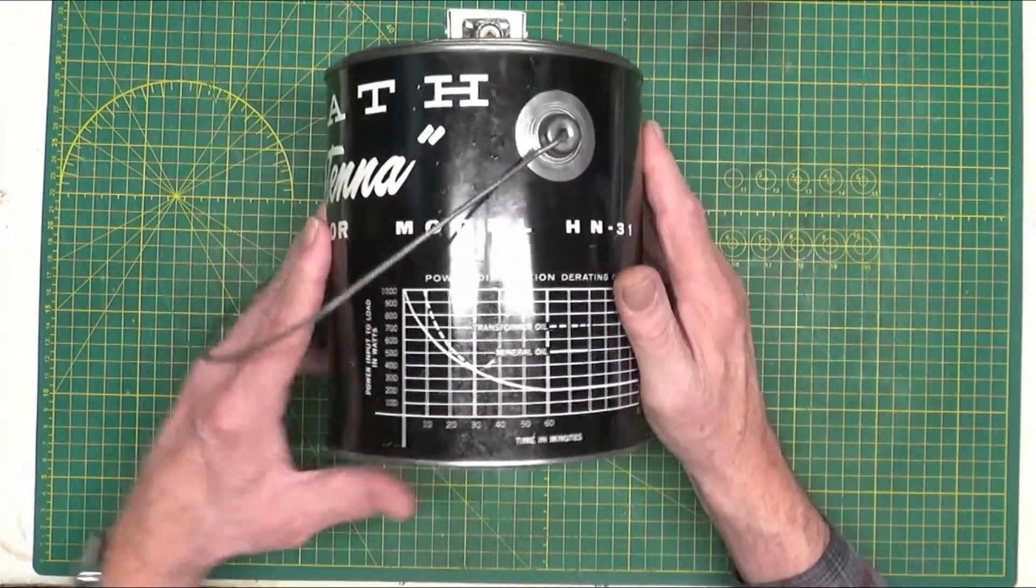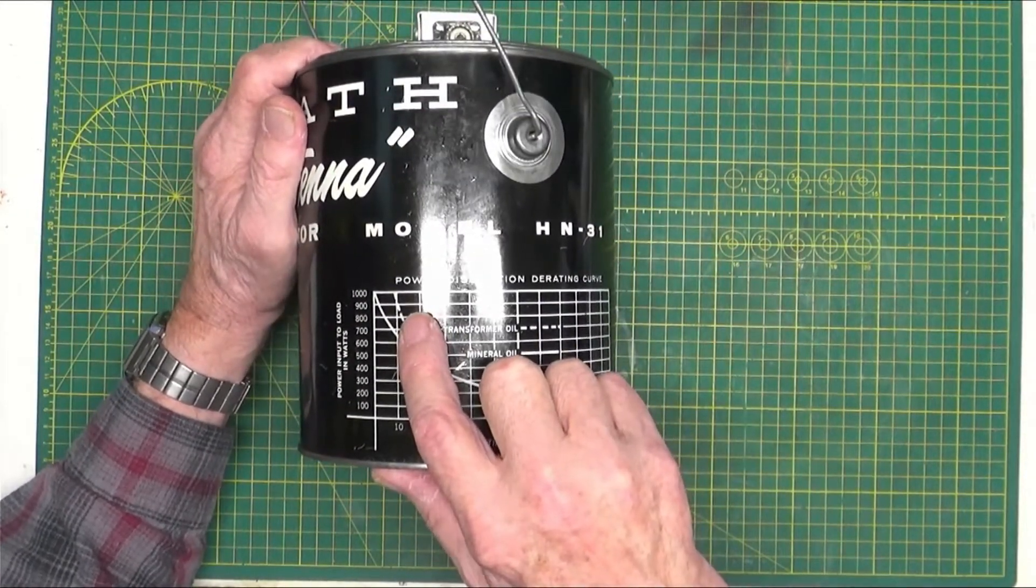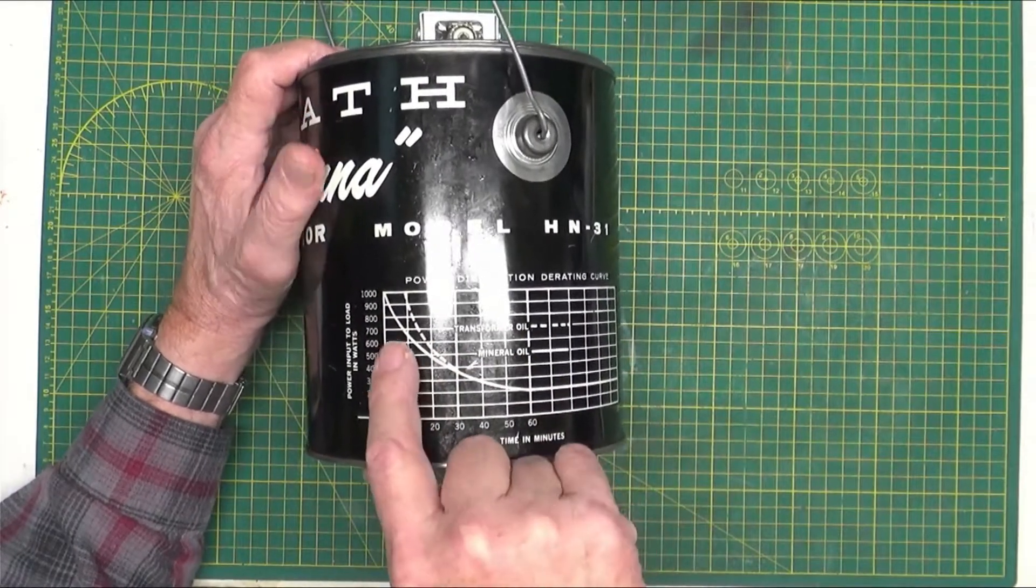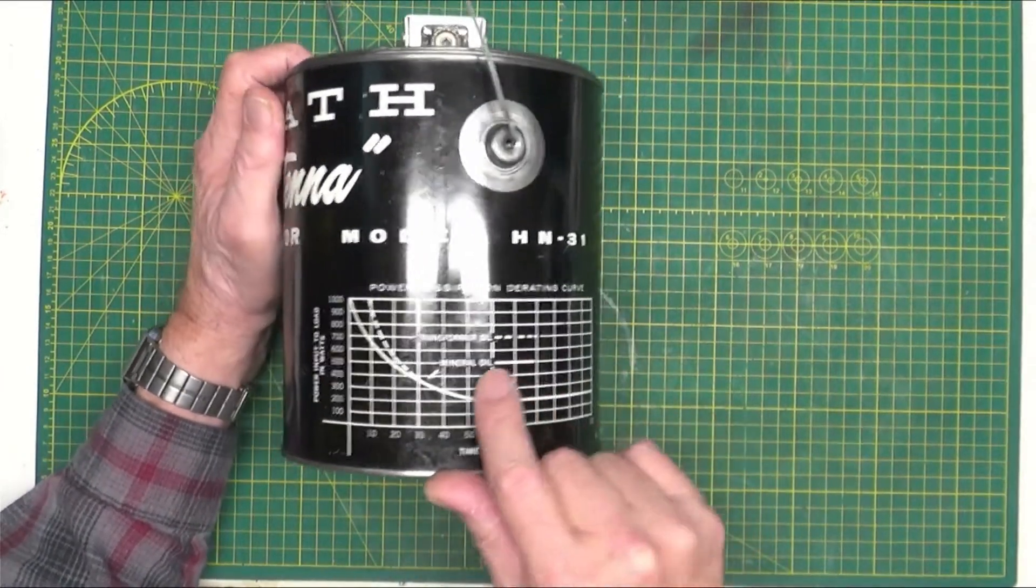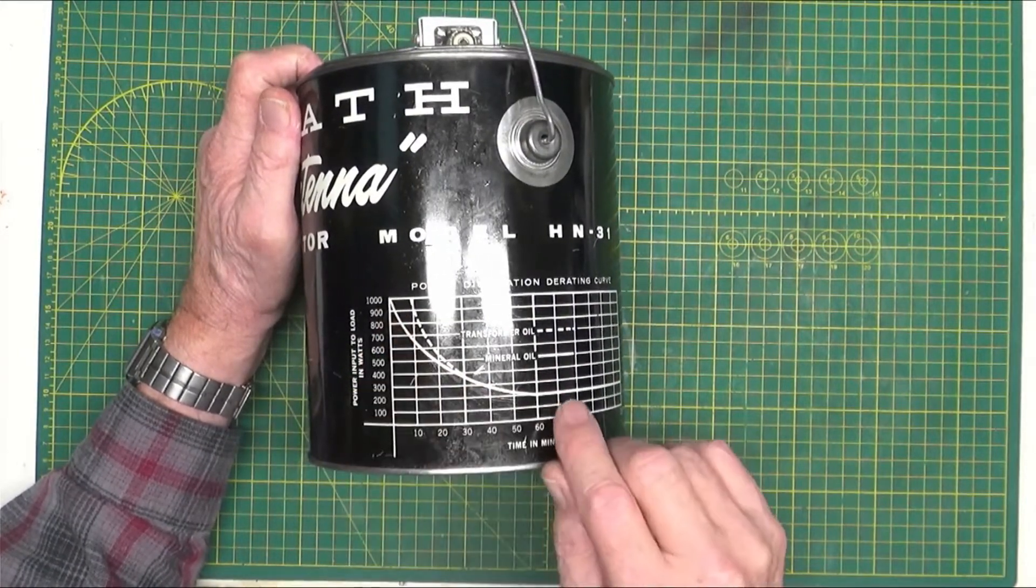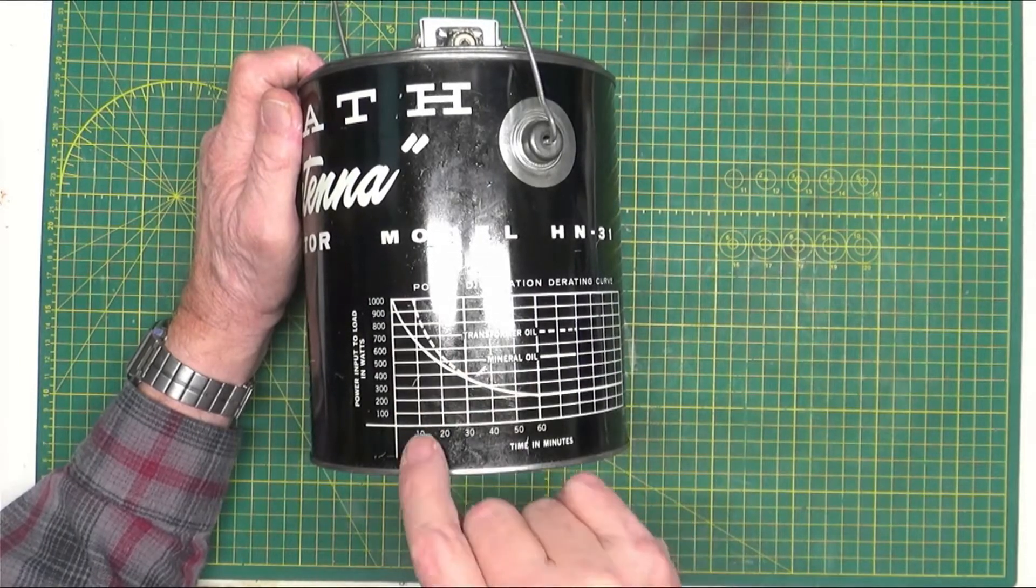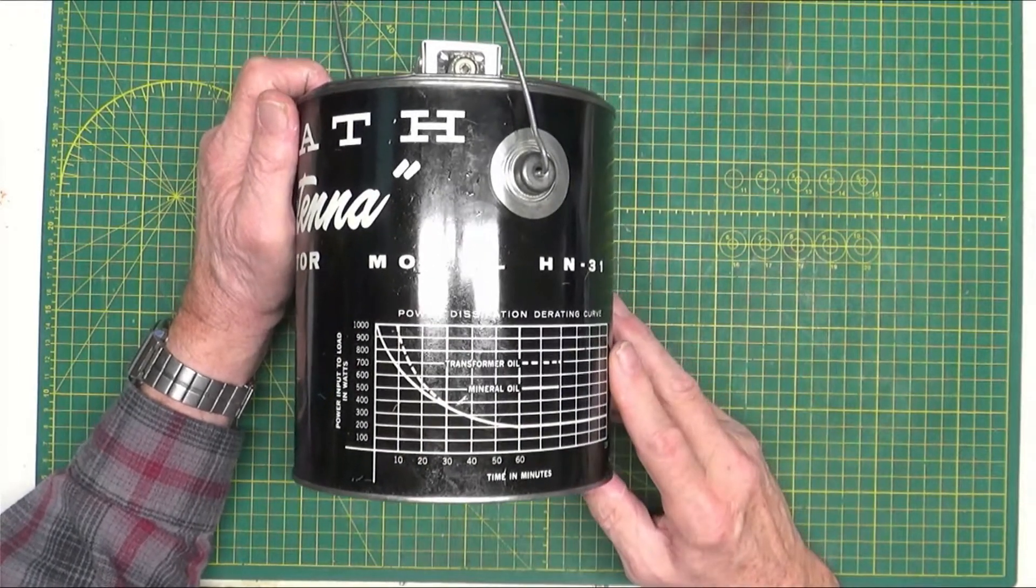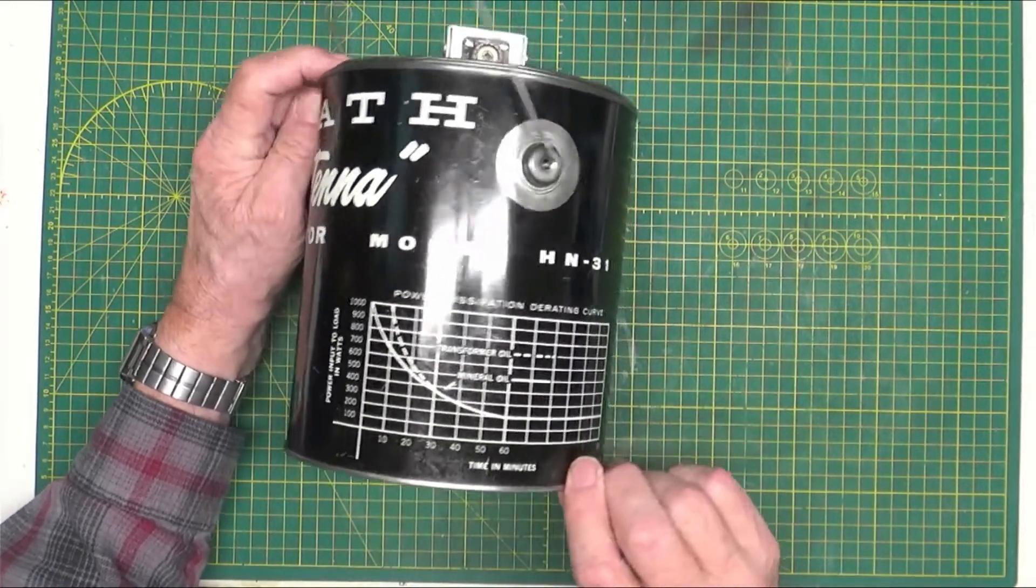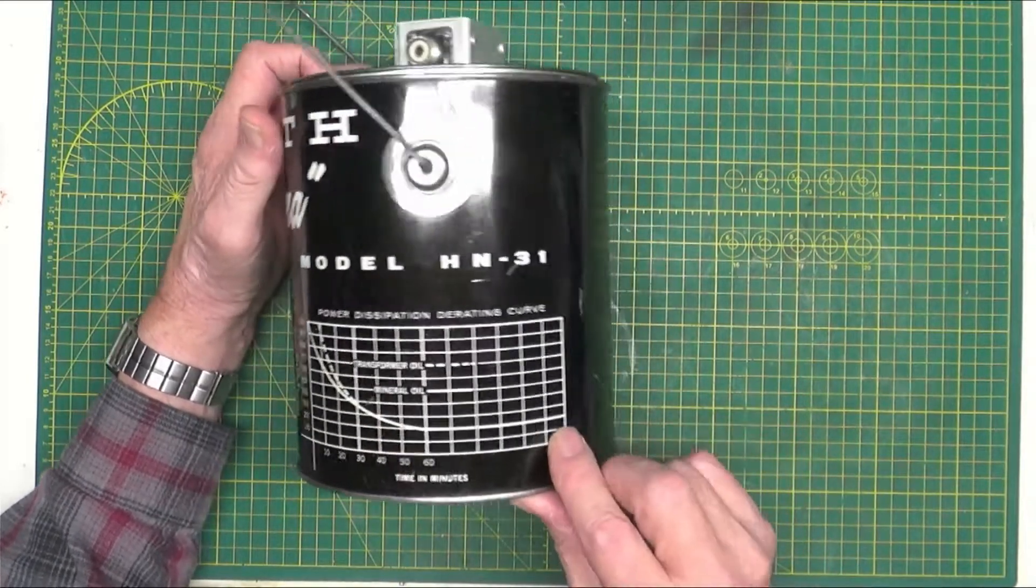Looking at the side, we see it says zero minutes with mineral oil (the solid line being mineral oil) and transformer oil. We got 10 minutes at 1000 watts, and this gets longer and longer as you go down. At 100 watts you got infinity, at 200 watts you've got 120 minutes.